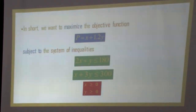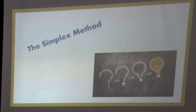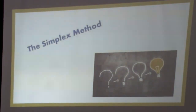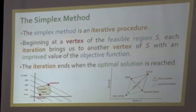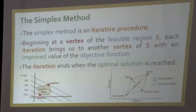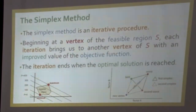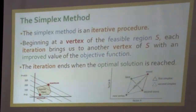The simplex method is an iterative procedure beginning at a vertex of the feasible region S. Each iteration brings us to another vertex of S with an improved value of the objective function. The iteration ends when the optimum solution is reached. The feasible region is the region defined by the set of coordinates that satisfies the system of inequalities.